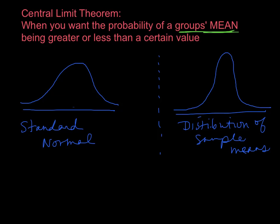By now you've read about the central limit theorem, how it works and when you use it. I just wanted to define it for you again. It has to do with when you take a group of people and you want the probability of that sample mean being higher or lower than a certain value. So we're looking for probability again.